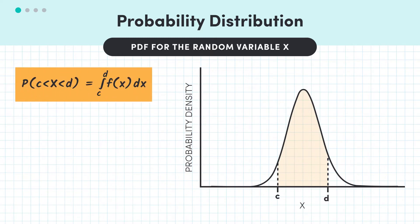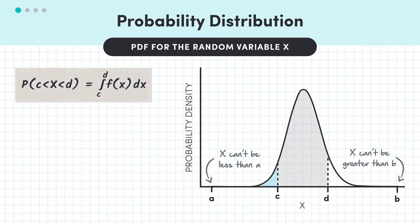Or further, if X is defined only on the interval between a and b, so X can't take a value less than a and it can't take one greater than b, we could say the probability that X is less than or equal to c is the integral from a to c of f(x) dx.